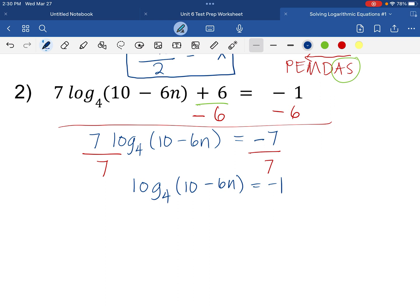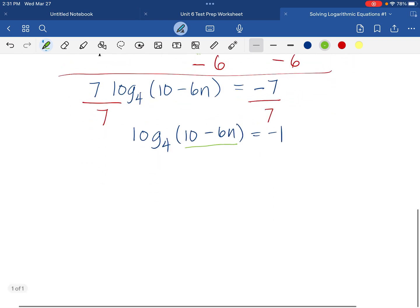We cannot get to the numbers that are inside the parenthesis unless we get rid of the log. So we are going to change this into exponential form. So we will have 4 to the power of negative 1 equals 10 minus 6n. 4 to the power of negative 1.